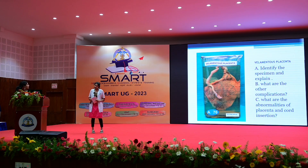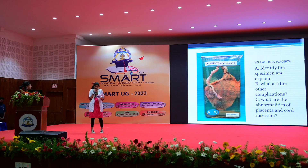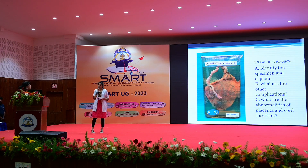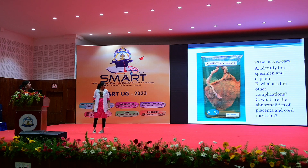What are the abnormalities of placenta and cord insertion? The other abnormalities include accessory placental lobe, annular placenta, battledore lobe placenta, circumvallate placenta, and tumors such as gestational trophoblastic disease and chorioangioma.